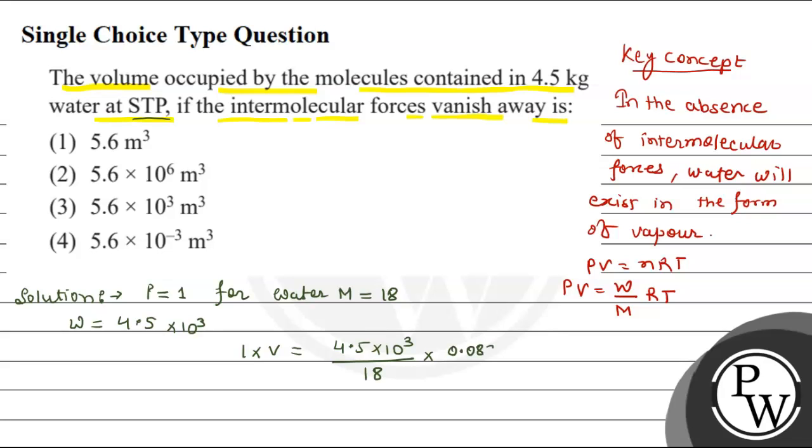into T that is 273 kelvin. So if you solve this, then you will get 5,603 liter. Convert this to